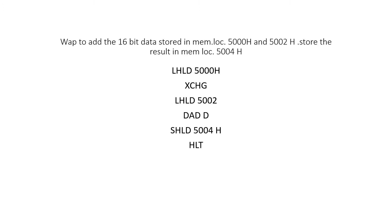The next program is 16-bit data addition where you are adding the data from memory location 5000 up to 5002 and storing the result at 5004. The data in 5000 and 5001 is taken to the HL pair, so the instruction for that is LHLD 5000.